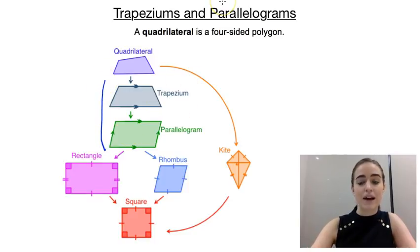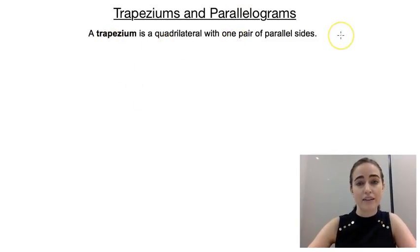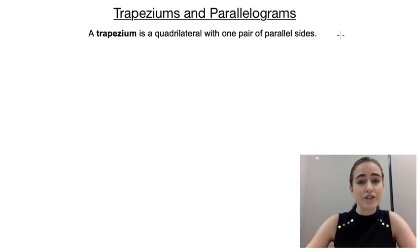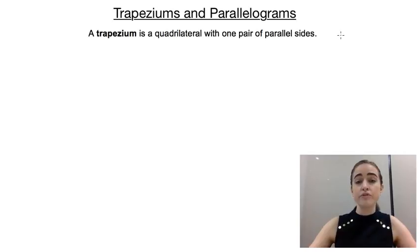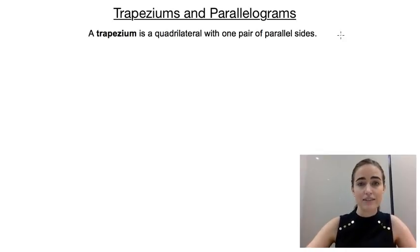Today we're looking at trapeziums and parallelograms. Starting with trapeziums — a trapezium is a quadrilateral with one pair of parallel sides. That's the only property of a trapezium. And if we were asked to prove that a quadrilateral was a trapezium, that's the one thing we would have to prove: that it has one pair of parallel sides.